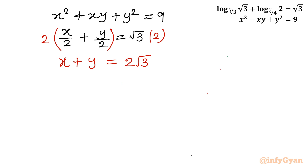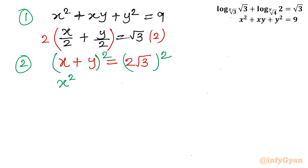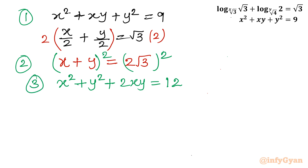After multiplying by 2, equation 2 becomes x plus y equal to 2 root 3. Now squaring both sides of this equation gives x squared plus y squared plus 2xy equal to 4 times 3, which is 12. Calling this equation 3, I will now compute equation 3 minus equation 1. This leaves only xy on the left-hand side, and 12 minus 9 equals 3 on the right-hand side.